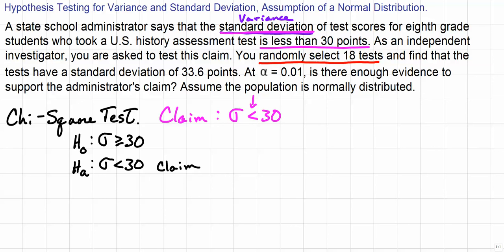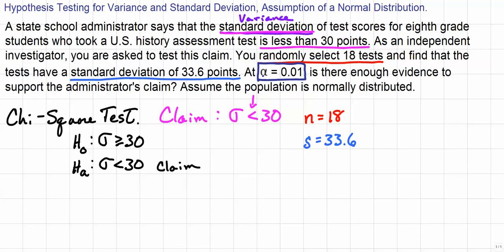We randomly selected 18 tests, which means n, our sample size, equals 18. We also find that the sample standard deviation, little s, equals 33.6 points. The level of significance, alpha, is 0.01.